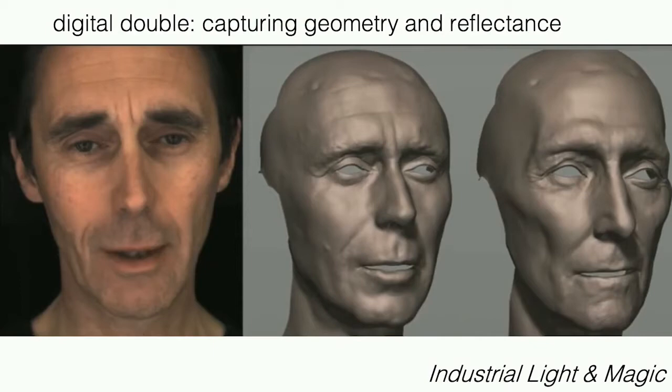My ambition has always been to take out all of these very difficult technical problems that we have to solve to create these very, very realistic models. So if we want to create a digital double and capture really high quality geometry and reflectance — this is the kind of quality you get with the light stage — can we actually do it just from a single image? Can we just do it from a video captured with a single camera? That's what my research has always been about.